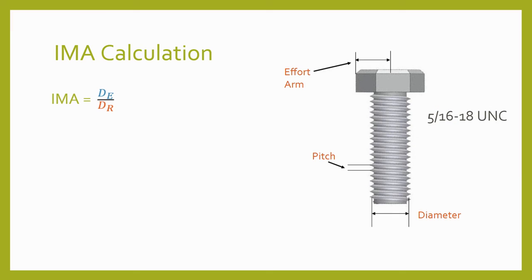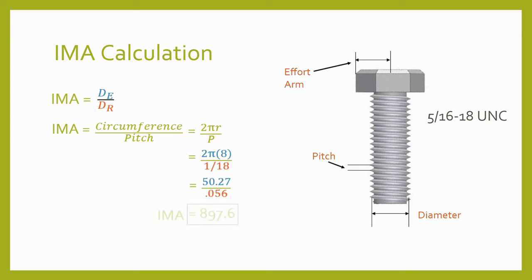Let's try a practice problem. We'll assume the bolt is being tightened with an 8-inch wrench, so the effort arm is 8 inches. The thread note indicates a TPI of 18, so the pitch is one-eighteenth of an inch. When we crunch the numbers we find an ideal mechanical advantage of about 897.6 to 1. The 8-inch wrench definitely helped get it this high, but screws can provide incredibly high mechanical advantages. A drawback is they tend to have a very high amount of friction, so their efficiency tends to be low.